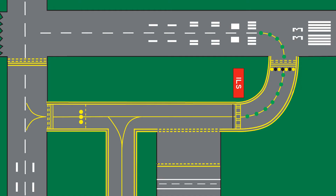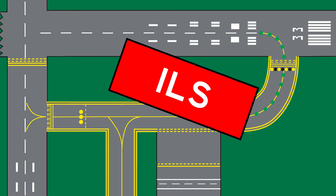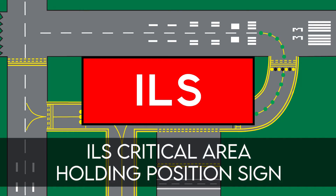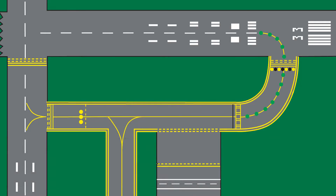The next type is the ILS critical area holding position sign. At airports where the instrument landing system is being used, it is necessary to hold an aircraft on a taxiway. In these situations, the holding position sign will have the text 'ILS' and be located adjacent to the runway holding position markings on taxiways.